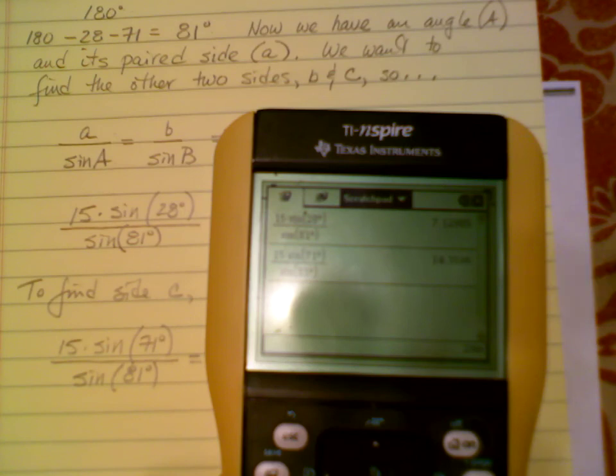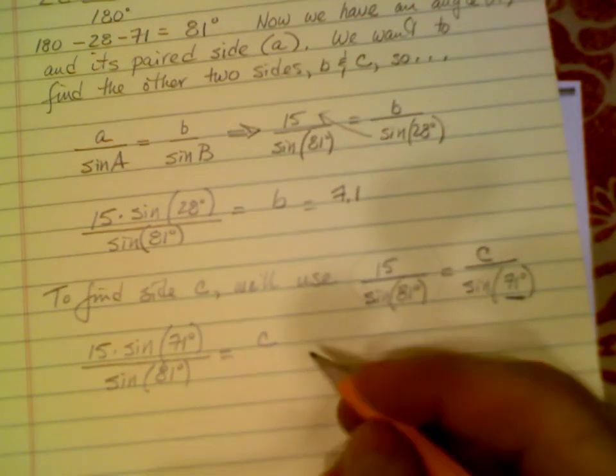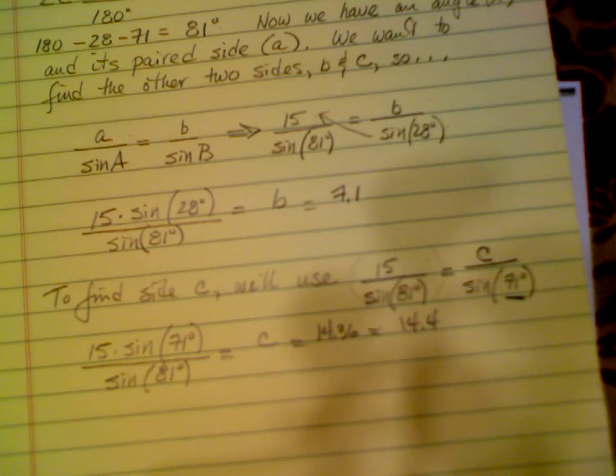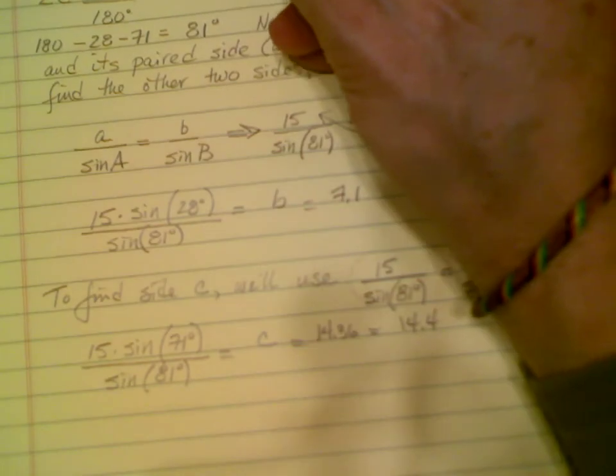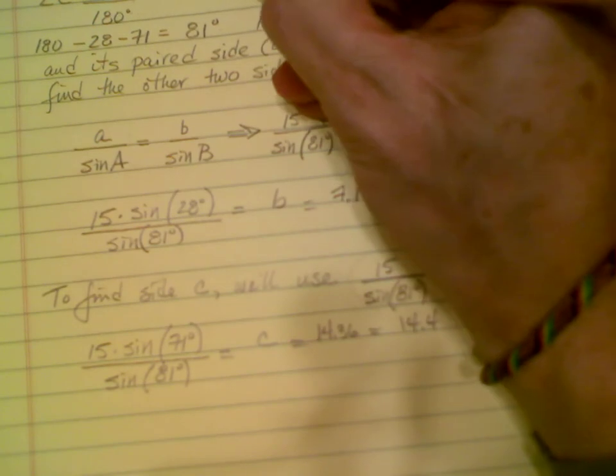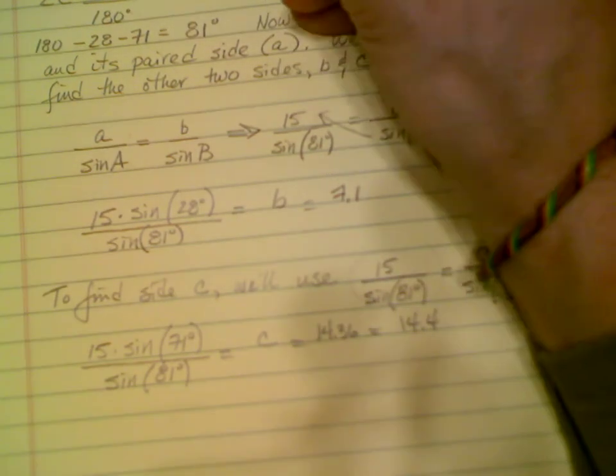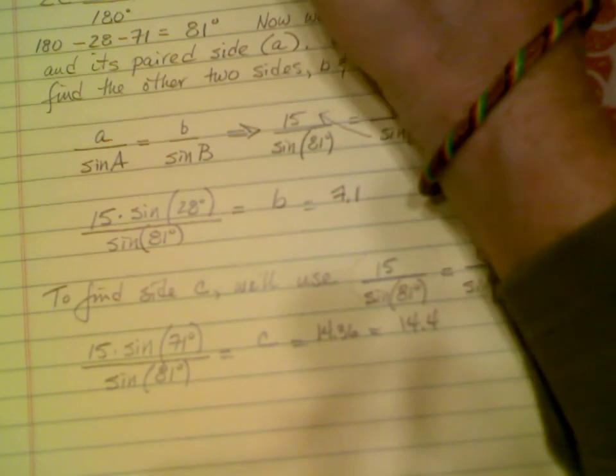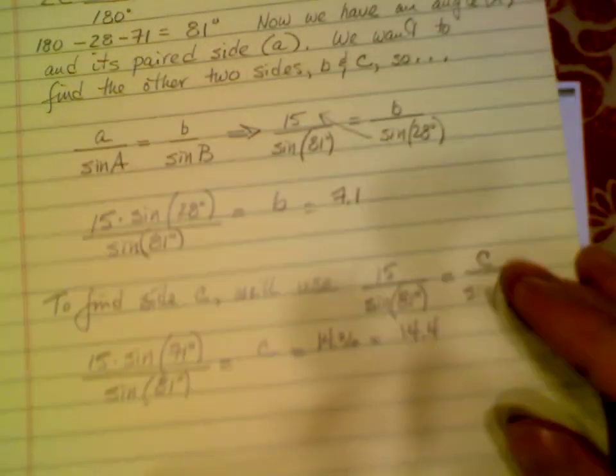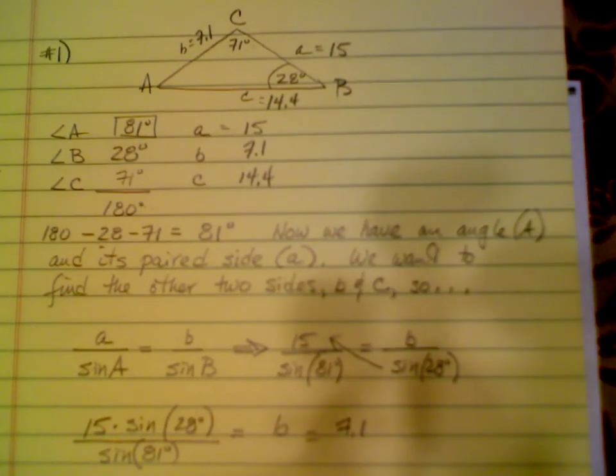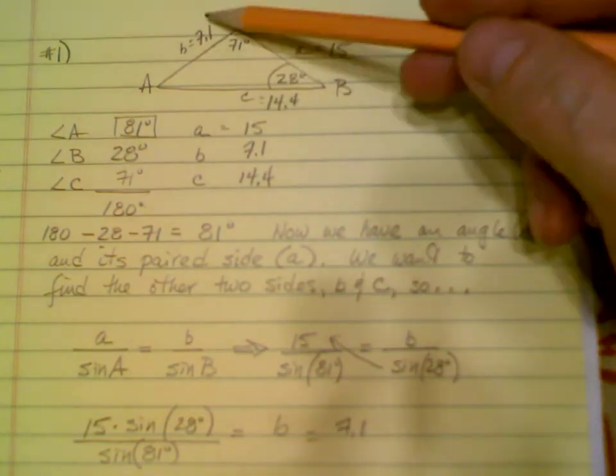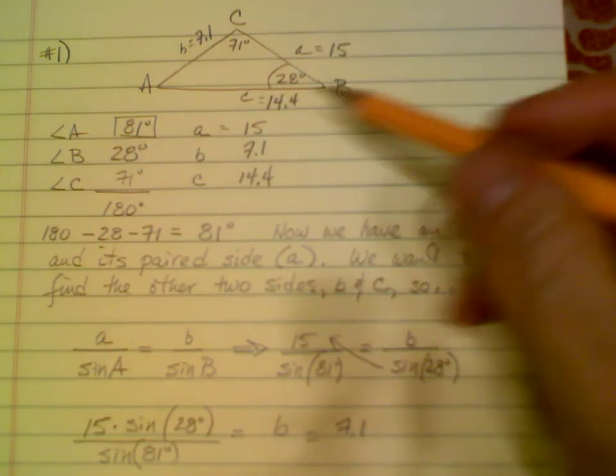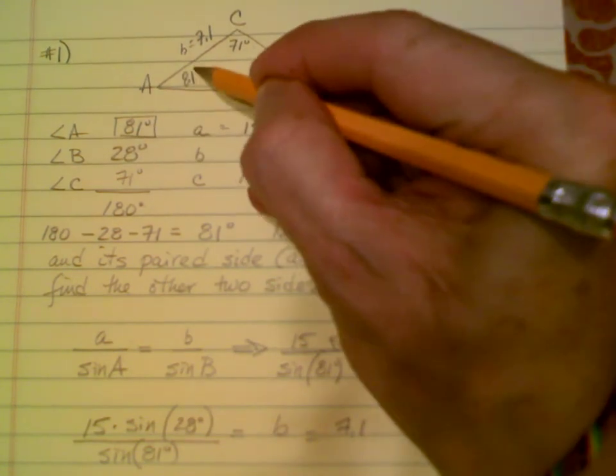I get my new problem and my new answer, which is 14.36, or 14.4. And that makes it a lot easier. So my sides are 7.1 and 14.4. Fill those in: this is equal to 14.4, and side B right here is 7.1. I'm done with the problem. That's where I put the answers right at the top: 14.4 here for C, 7.1 for B, and I already had A. So, last angle, angle A is 81 degrees. There we are.